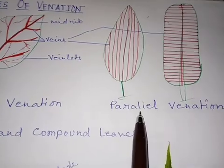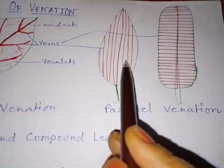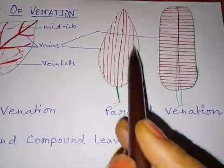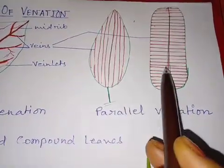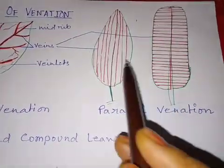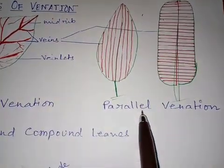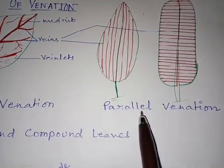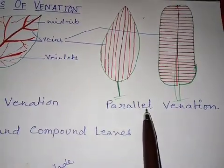What is parallel venation? In parallel venation, the veins are running parallelly in the leaf lamina. See in both the leaves the veins are running parallelly. Such type of arrangement of veins is called parallel venation.